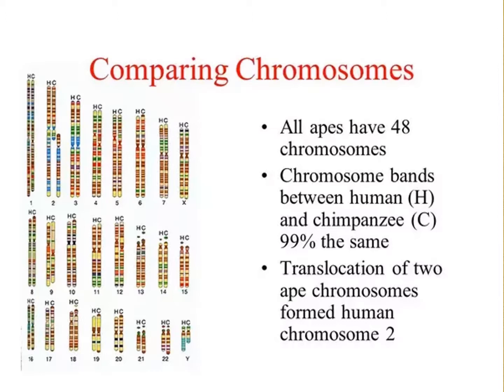It's argued commonly that the human fusion of chromosome number 2 is evidence of an evolutionary ancestry with our ape ancestors. It does seem clear that humans did experience a fusion of chromosome number 2 sometime in the past.